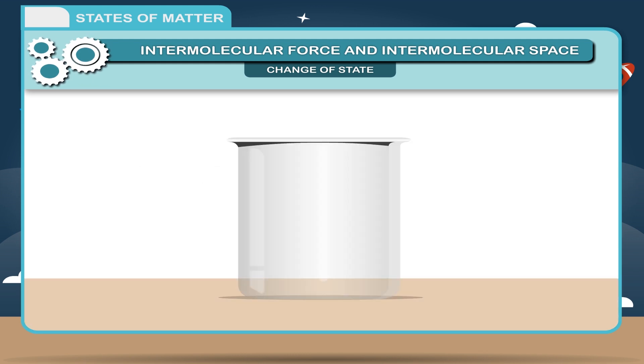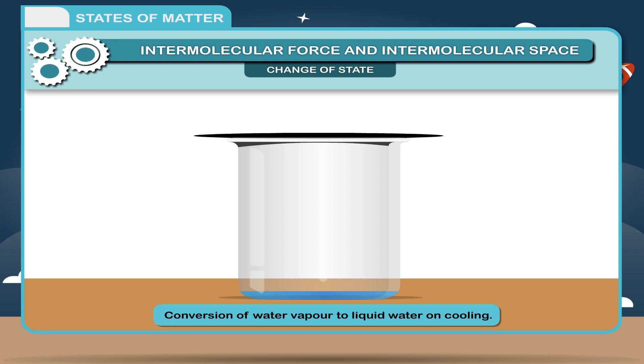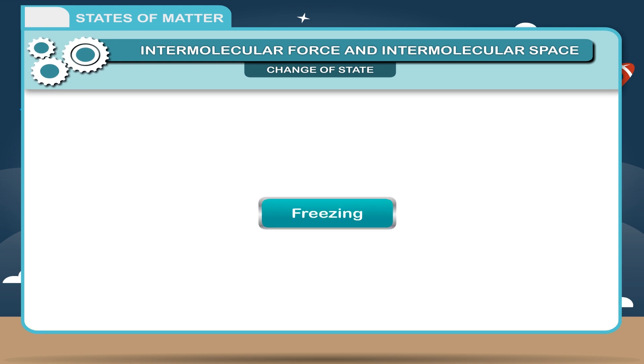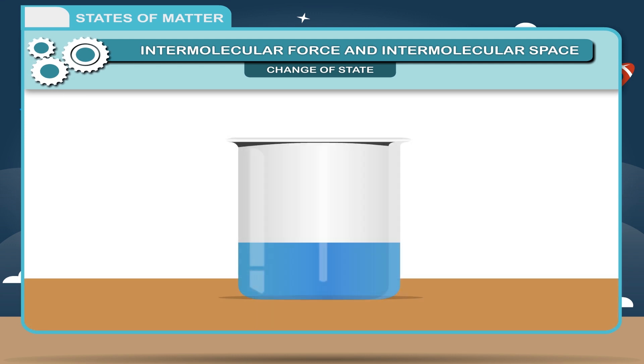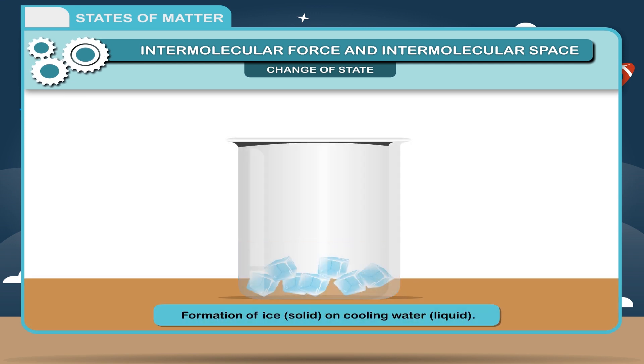Freezing. Conversion of liquid into solid on cooling is called freezing. Example: Formation of ice (solid) on cooling water (liquid).